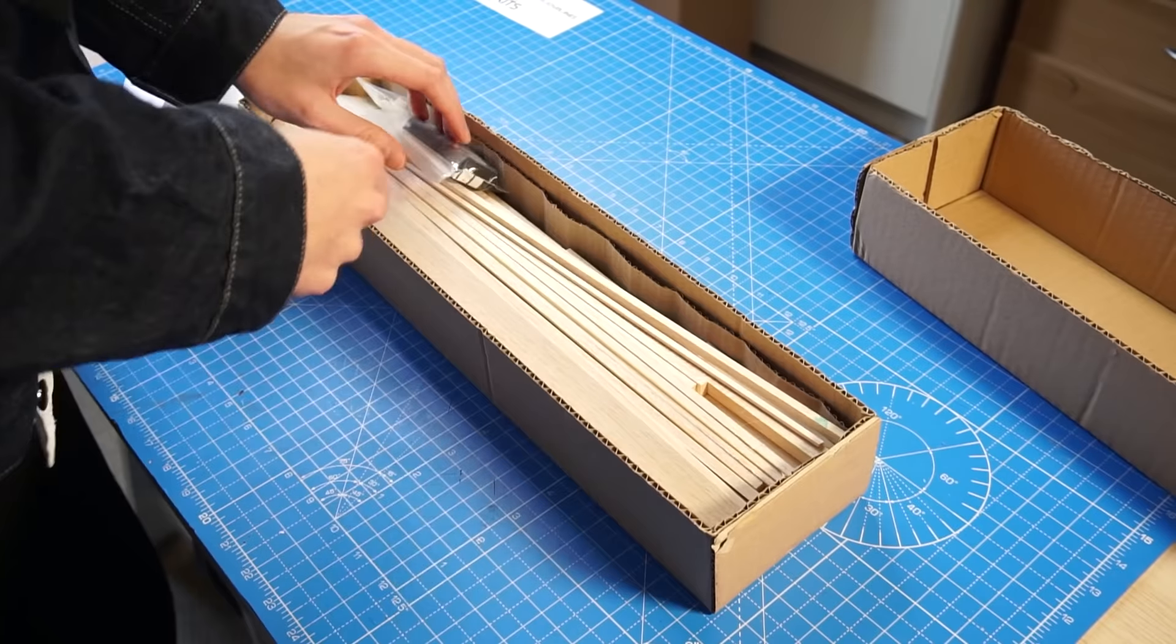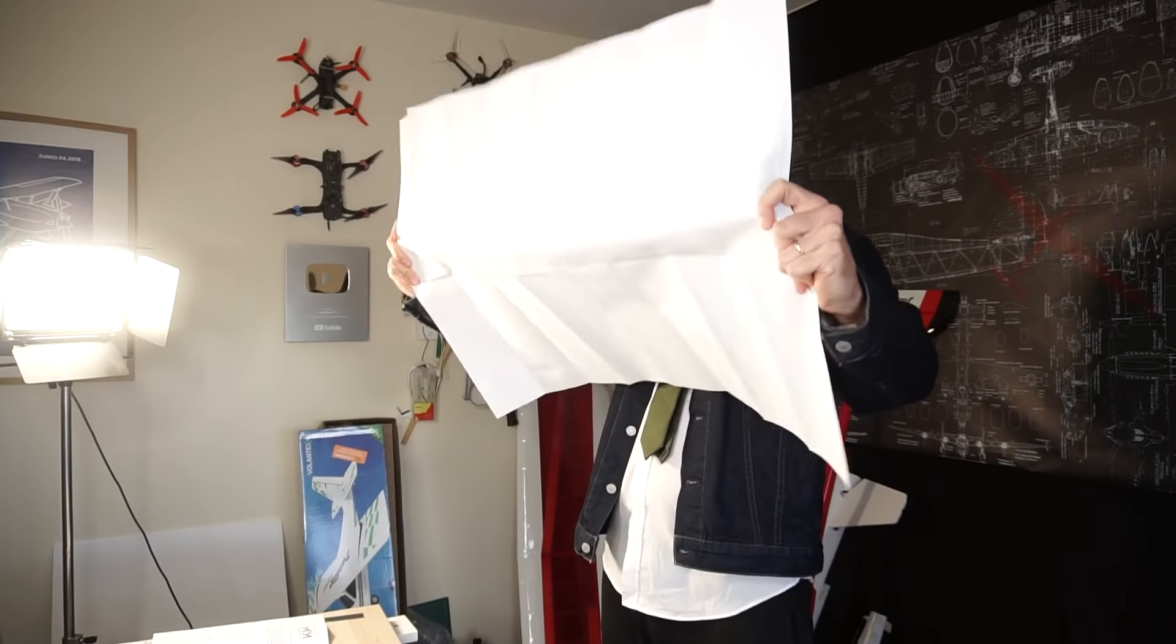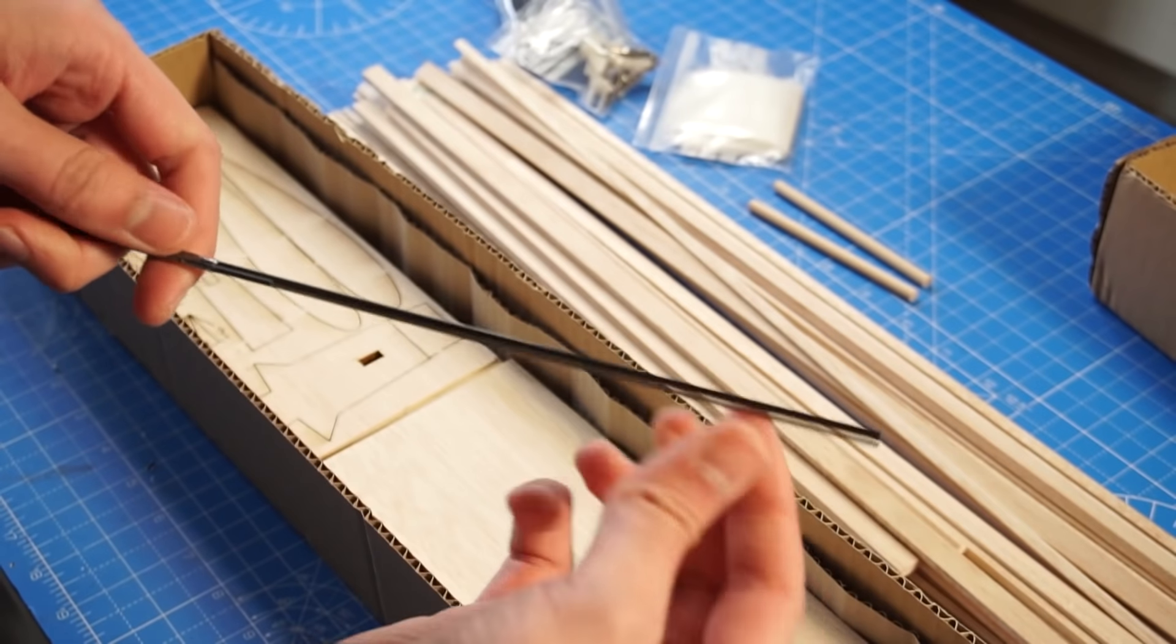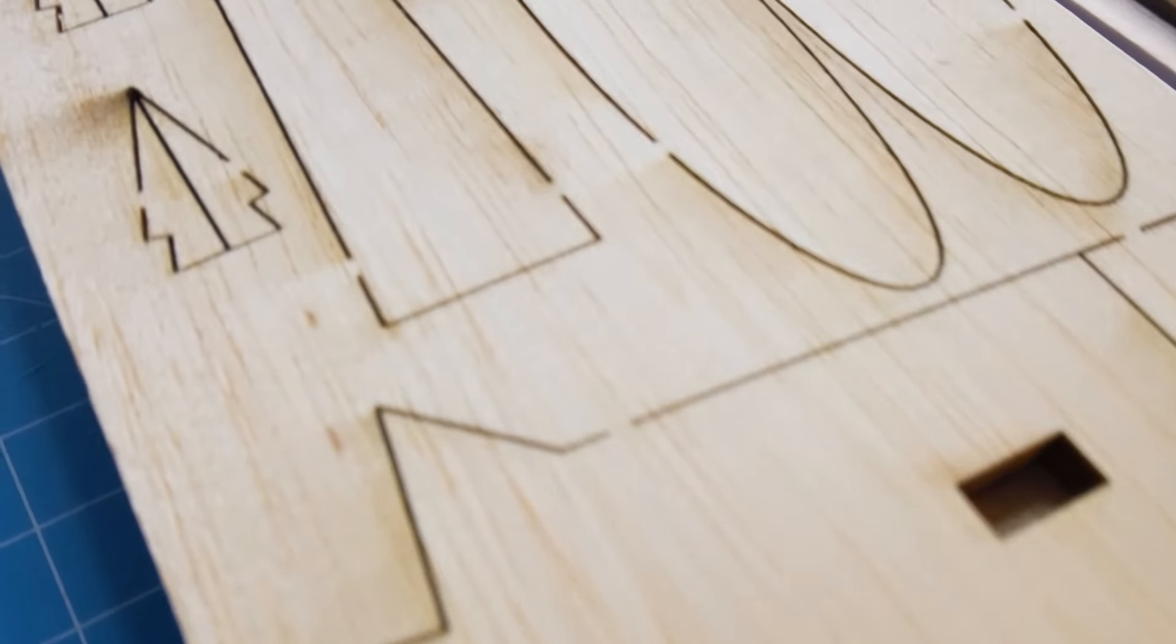We are happy to announce our first RC trainer airplane balsa wood kit, it is called Tanner. What you see there is the first version of this kit, it's completely laser cut so everything will fit perfectly.